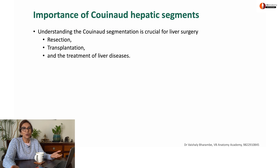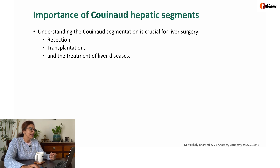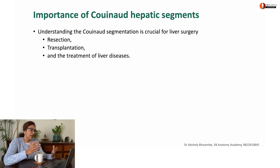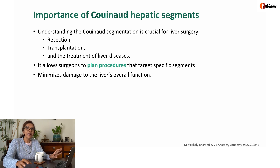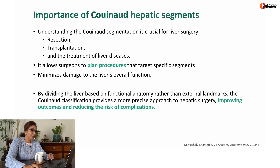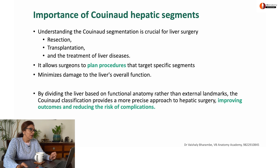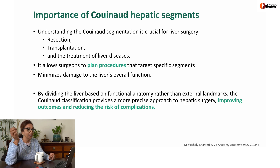What is the importance of discussing all this? This segmentation helps in resections of the liver, transplantation of the liver, and treatment of diseases. It allows surgeons to plan procedures involving specific segments with minimal damage to the rest of liver function. By dividing the liver based on functional anatomy rather than external landmarks, Couinaud's classification provides a more precise way of performing hepatic surgery, leading to better outcomes and reducing the risk of complications.